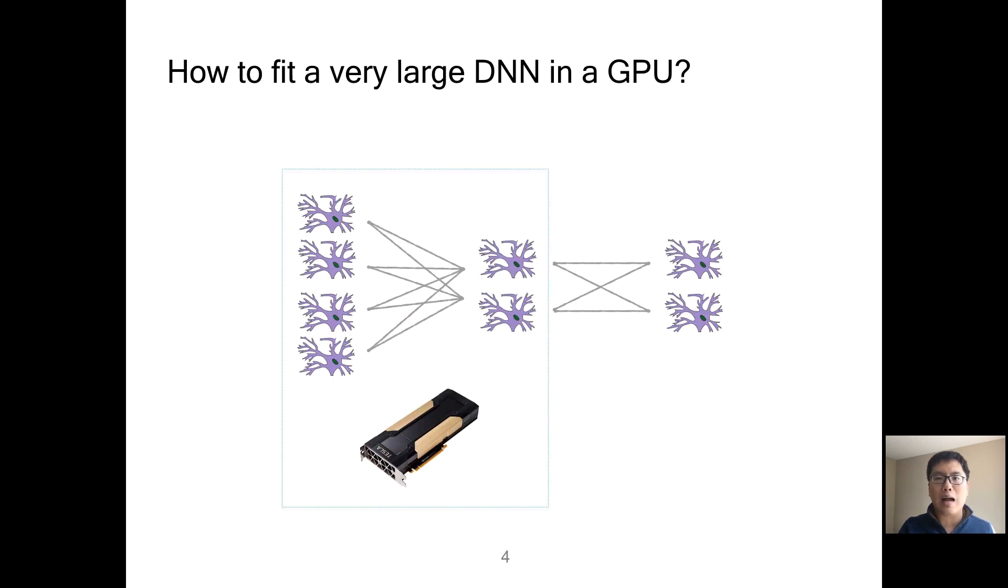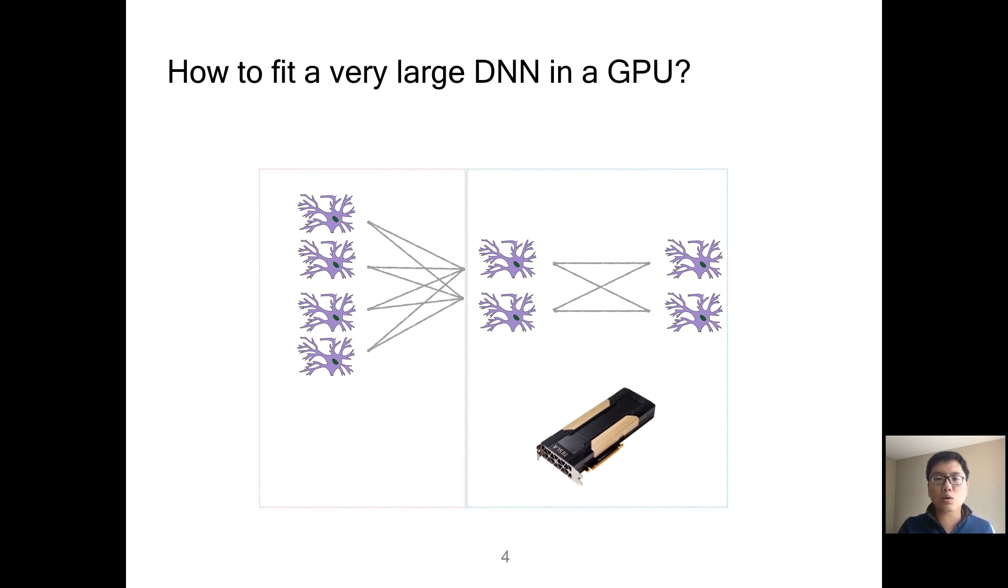Since most neural networks are executed layer by layer, we can put the required tensor to GPU memory and execute the current layer. After execution, we move to the next layer. Those temporarily unused tensors can be offloaded to CPU memory to release GPU memory. We call this technique swapping. SwapAdvisor utilizes swapping to support large DNN models.